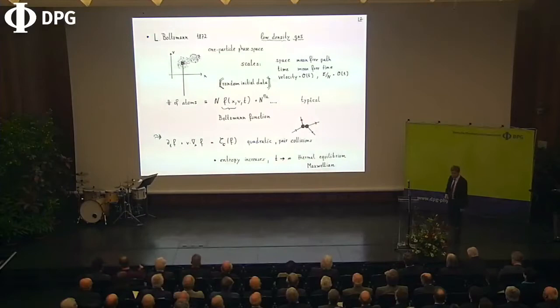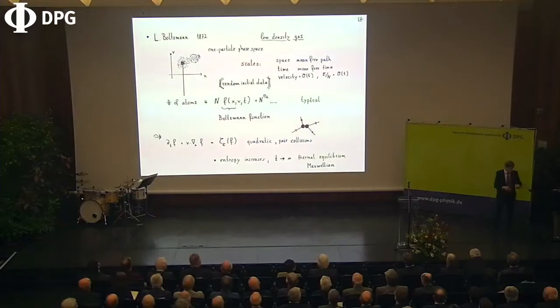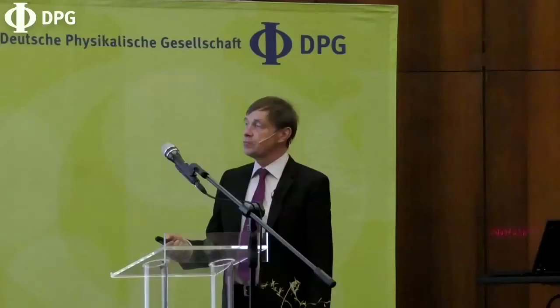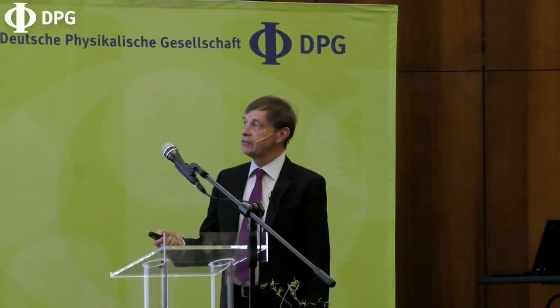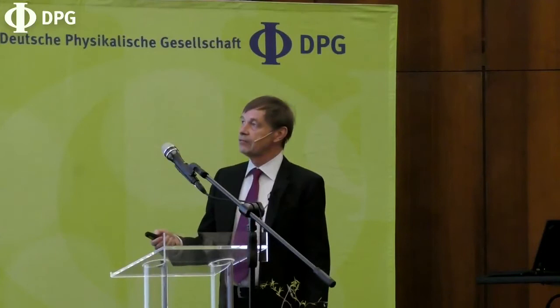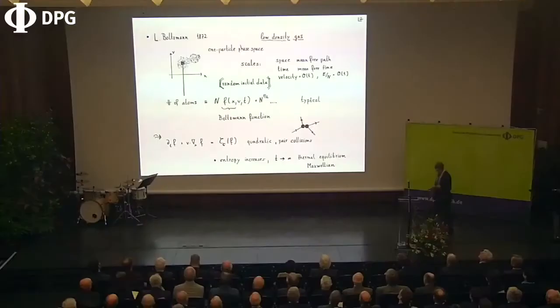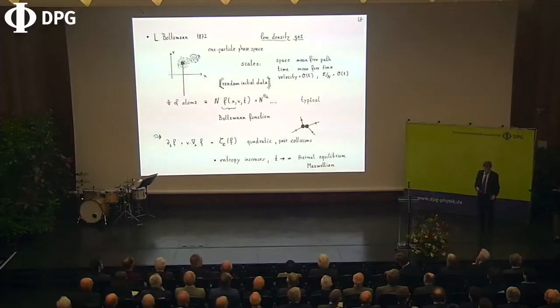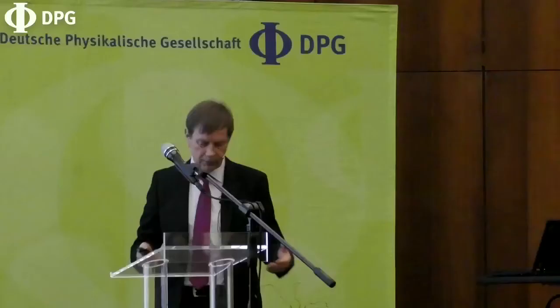It's an interacting system, fairly complicated. His idea was that each particle has a position x and a velocity. These many particles can be represented as a cloud of points in what people call the one-particle phase space. At low density, the relevant space and timescale are given by the mean free path — the path a particle moves freely without collisions — and the corresponding mean free time. The energy per particle is of order one in these units.